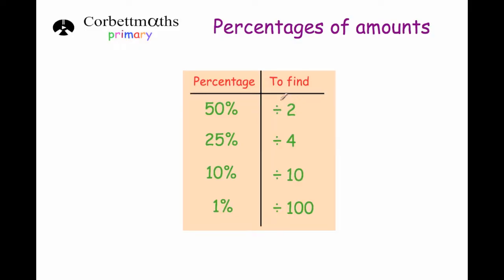To find 50% of a number you just divide it by 2, because 50% is a half. To find 25% you divide by 4, because 25% is a quarter — or you can divide by 2 and by 2 again, since that's the same as dividing by 4. To find 10% you divide by 10, and to find 1% you divide by 100.